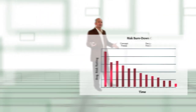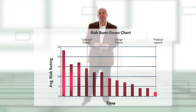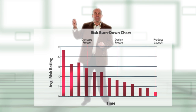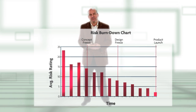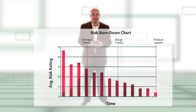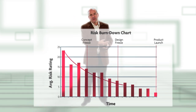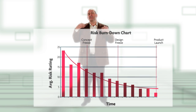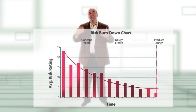So once again, we see our risk management graph. The vertical axis represents the average risk rating for all the risks together. The horizontal axis represents time. The curved exponential curve in the center represents our expectations of the risk and how we want risk to be decreased with time.